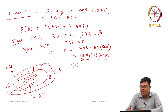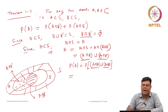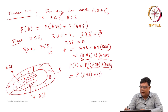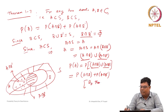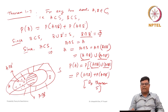So probability of A can be represented as the union of two disjoint sets: A intersection B union A intersection B complement. Since these are disjoint, by Axiom 3 or Theorem 1.5, we can add these two probabilities. So probability of A equals probability of A intersection B plus probability of A intersection B complement. This is an important theorem and later we will see many applications.